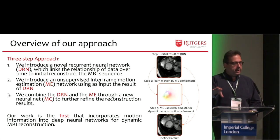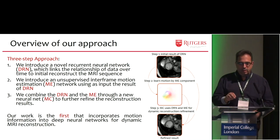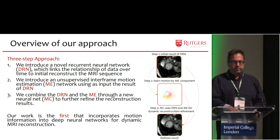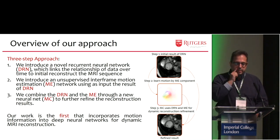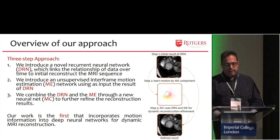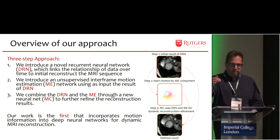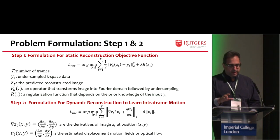In a nutshell, what are we doing? We have a three-step approach. First, we introduce a novel recurrent neural network which links the relationship of the data over time to initially reconstruct an MRI sequence. Then we introduce an unsupervised inter-frame motion estimation network which uses the result of the previous network as input. Then we combine the DRN and the ME through a new neural network to further refine the reconstruction results. This is the three-step process you can see on the right, and this is the first time this has been done.